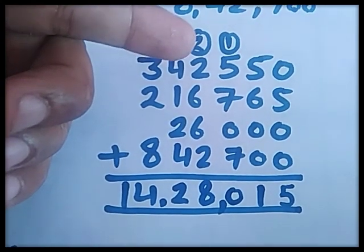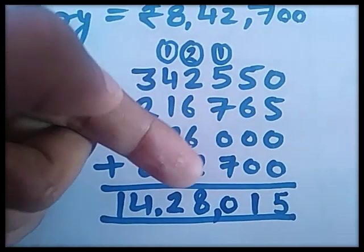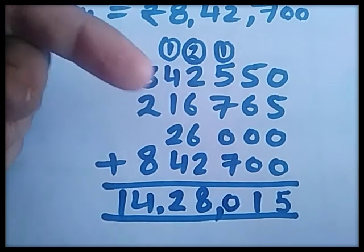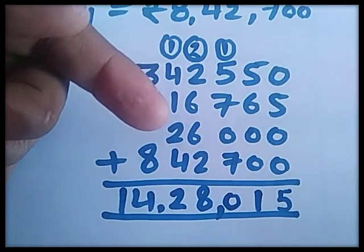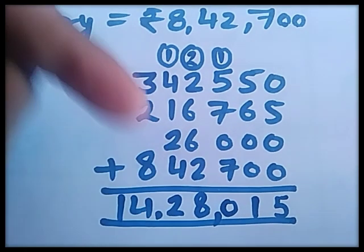Now 2 plus 2 is 4, 4 plus 6 is 10, 10 plus 6 is 16, 16 plus 2 is 18. Carry 1. 4 plus 1 is 5, 5 plus 1 is 6, 6 plus 2 is 8, 8 plus 4 is 12. Carry 1.